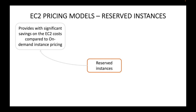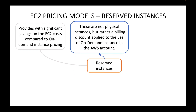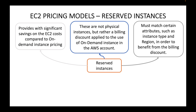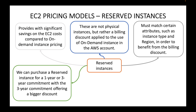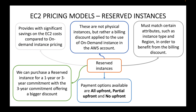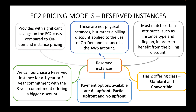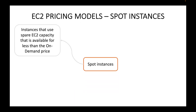Reserved instances provide significant savings compared to on-demand instances. These are not physical instances but rather a billing discount applied to on-demand instance usage in your AWS account. Certain attributes such as instance type and region must match to benefit from the billing discount. You commit to a one-year or three-year contract, with upfront, partial upfront, or no upfront payment options. There are two types: standard, where you cannot change instance attributes after reserving, and convertible, where you can change instance attributes.